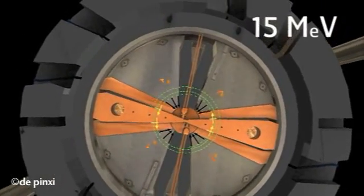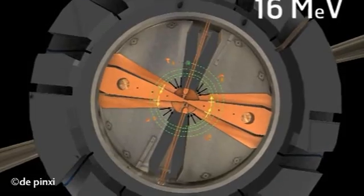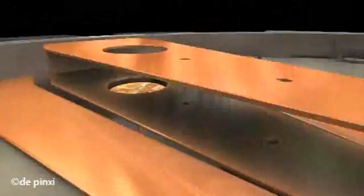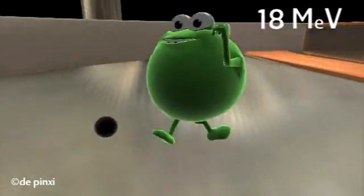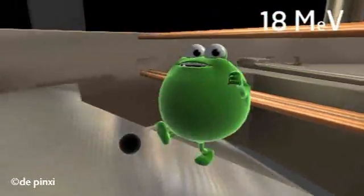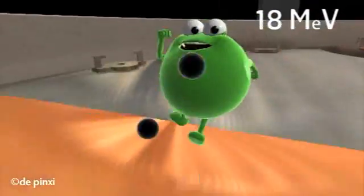IBA cyclotrons have four acceleration zones and four zones of magnetic field. This creates very compact high-energy cyclotrons with low losses. In an 18-9 cyclotron, I'm accelerated up to 18 mega-electron-volts.